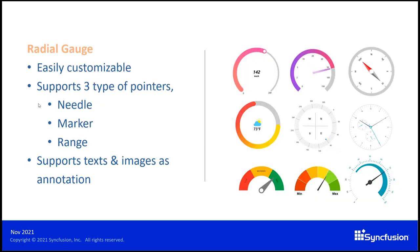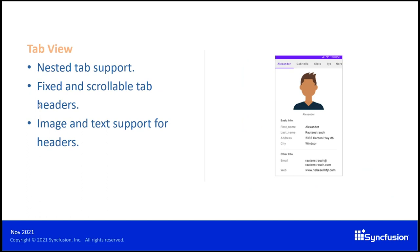For this release, we have introduced a completely customizable radial gauge which supports three types of pointers: needle, marker, and range. For annotations, you can include both text and images. In the tab view for the initial release, we have provided support for nested tabs. You can choose between fixed and scrollable tab headers, and you can add both text and image as the header of the tabs.